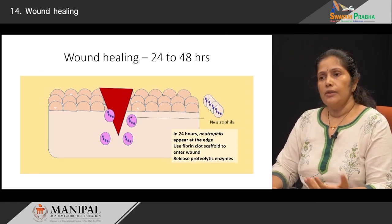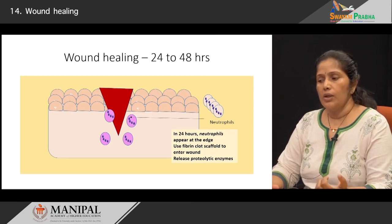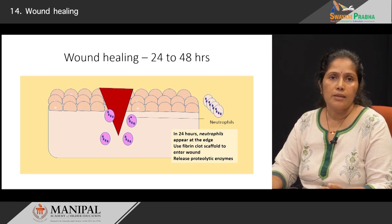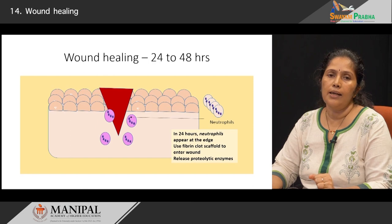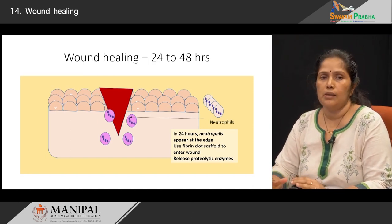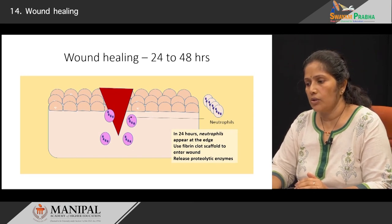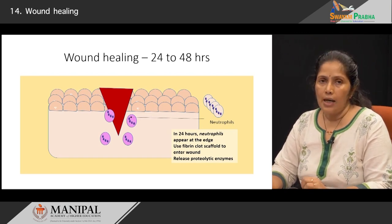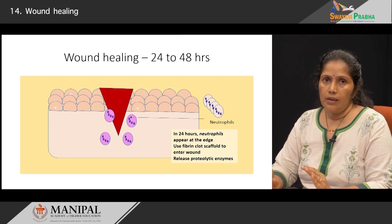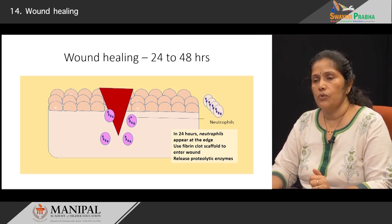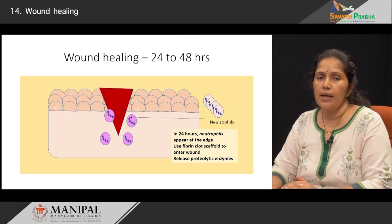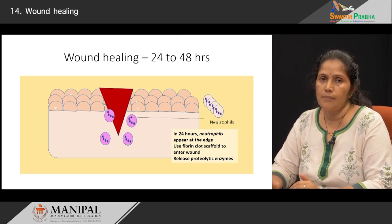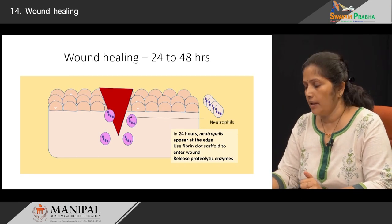As I mentioned, the first cells to come in are the neutrophils. Immediately after the clot is formed, within 24 to 48 hours, neutrophils start infiltrating into the area of injury and use the fibrin meshwork to travel inside the clot. Inside the clot, neutrophils release proteolytic enzymes to digest or remove all the dead tissue — that is the function of the neutrophils.